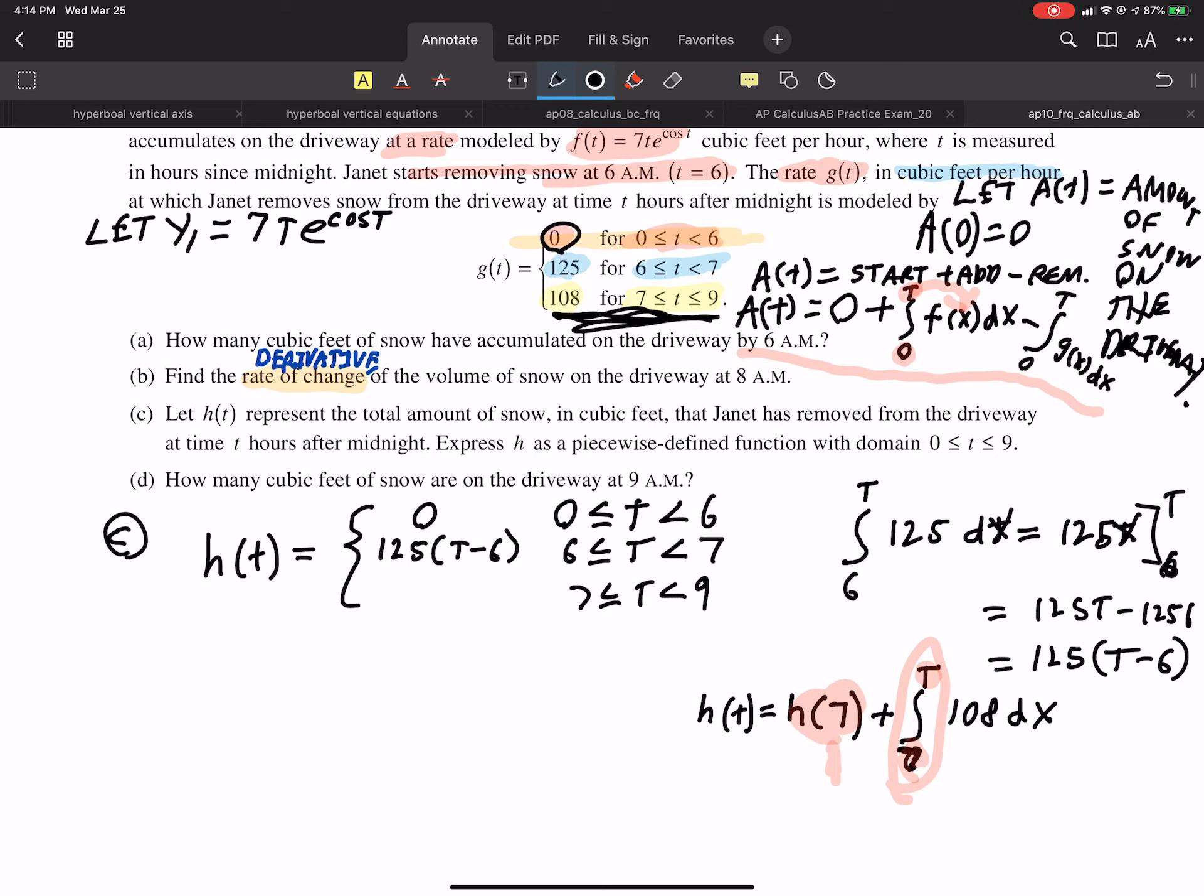So, what is H of 7? You can just plug in 7 right there and use a 125. Because, clearly, in that hour, she removes 125 per hour. And, she worked for an hour, so it's 125. And, if you find the anti-derivative of this and plug in T, plug in 7, you're going to get 108 T minus 7. So, again, T minus 7 is the amount of time since 7 that she's been removing snow, times by the rate of 108. So, we're going to get this 125 plus 108 T minus 7. And, that is the answer. That's our piecewise function.